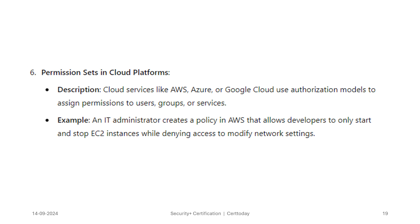Permission sets in cloud platforms: cloud services like AWS, Azure, or Google Cloud use authorization models to assign permissions to users, groups, or services. For example, an IT administrator creates a policy in AWS that allows developers to only start and stop EC2 instances while denying access to modify network settings.